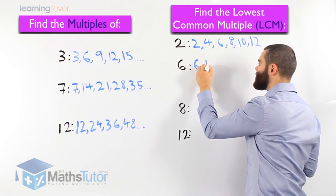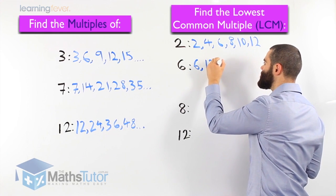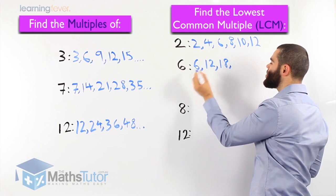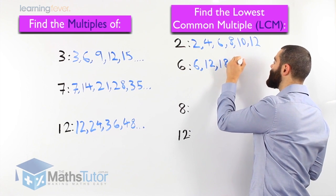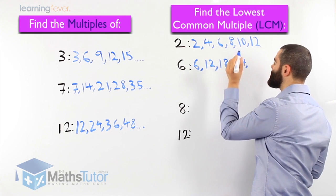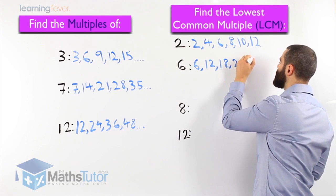Now the 6, let's see if we can find the lowest common one by just simply writing a couple. 6 times 1 is 6, then times 2 is 12, times 3 is 18, times 4 is 24, and let's do one more. 6 times 5 is 30.